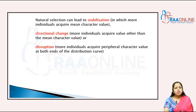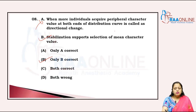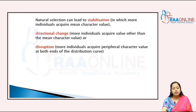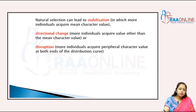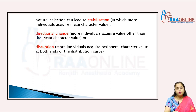In natural selection, we have three kinds of curves: the stabilization graph, the disruptive graph, and the directional changes. Natural selection can lead to three stages or changes: first is stabilization, second is directional changes, and third is disruption.